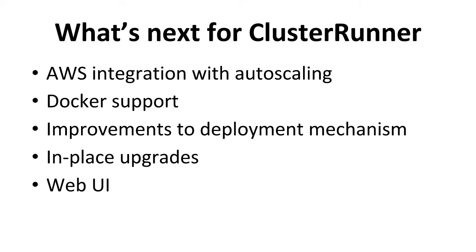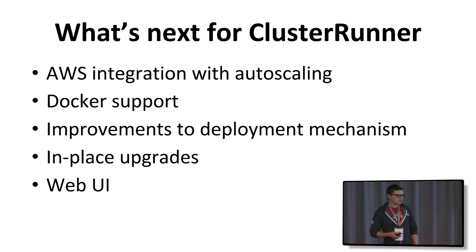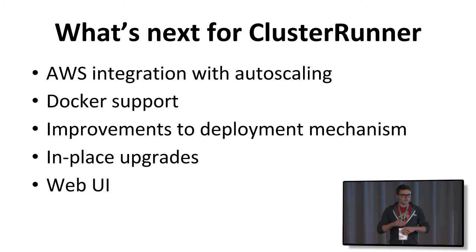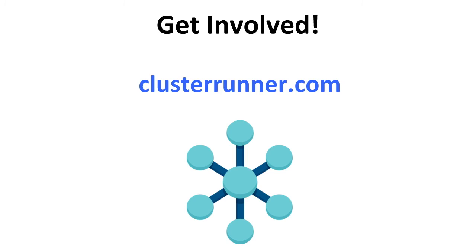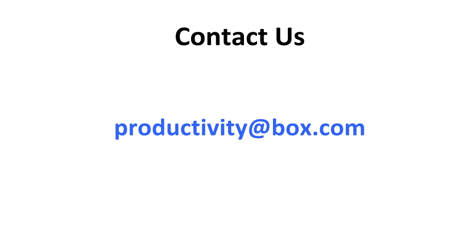Here's our wish list for what's next: AWS integration with auto-scaling — Cluster Runner already has endpoints for adding and removing slaves, and it would be great to do that dynamically. Also Docker support for running tests in containers to avoid environment differences. Improvements to the deployment mechanism, including in-place upgrades so you don't have to take the whole cluster down to update it. And a web UI to integrate the visualizations into a full dashboard. We love when people get involved and give feedback — go to clusterrunner.com, which also links to our GitHub repo. Email us at productivity@box.com with any questions.